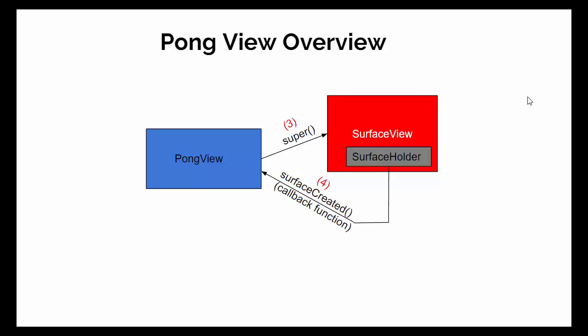What happens is that the SurfaceView constructor returns prematurely to PongView so that the remaining parts of the PongView class can be constructed. However, while this is going on, the SurfaceHolder is continuing to make its canvas. Once the canvas is done being created, the SurfaceHolder uses a callback function to alert the PongView that the surface has now been created. Based on that callback function, the PongView can then start the game and display it to the user.